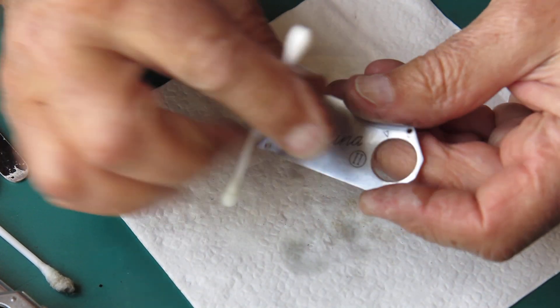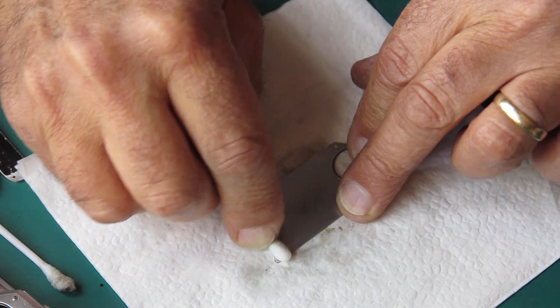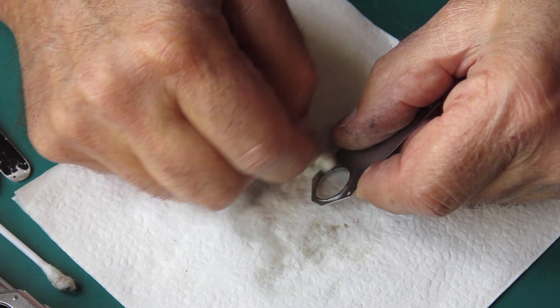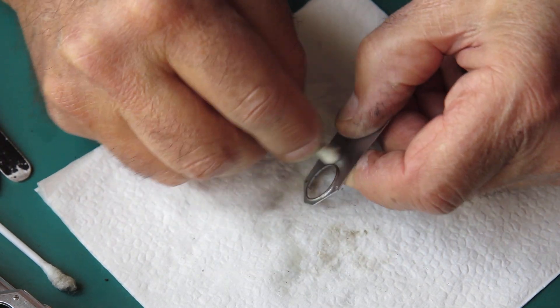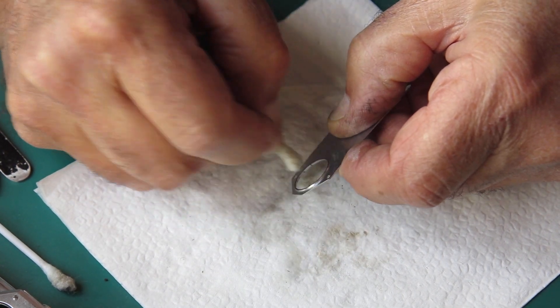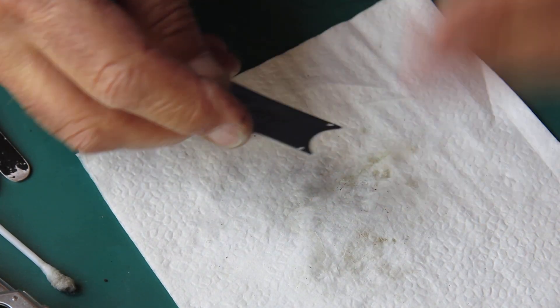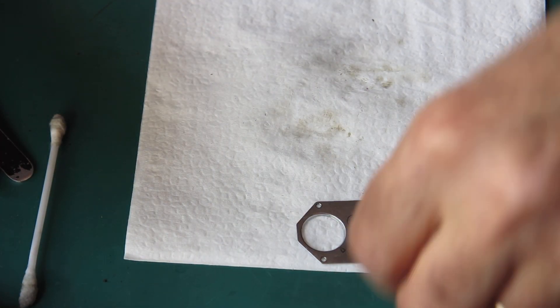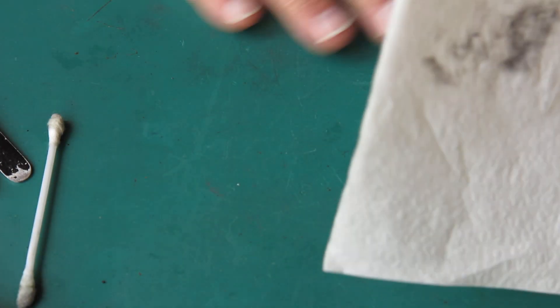Some of the Retina twos have the two in a circle and some of them do not. It signifies nothing as far as I can tell, it's just a styling difference. All right, so that's a cover it can be popped to one side. Next I need to deal with the shutter.